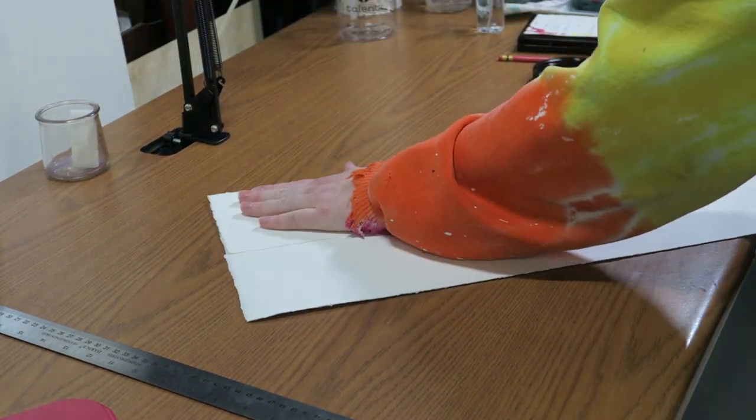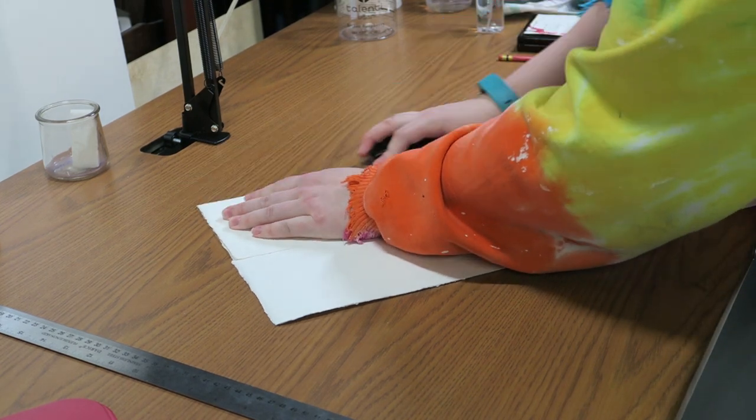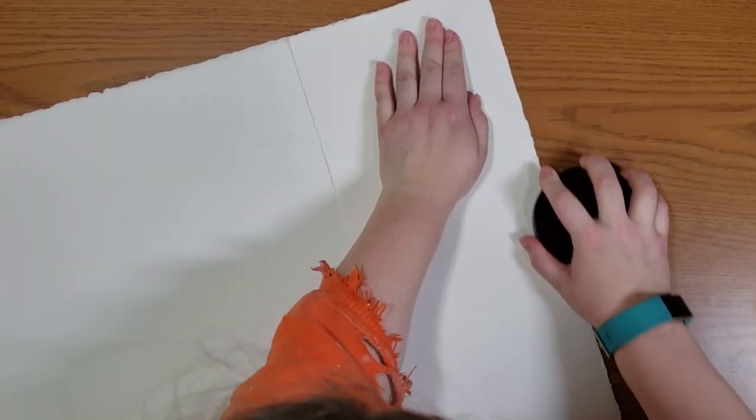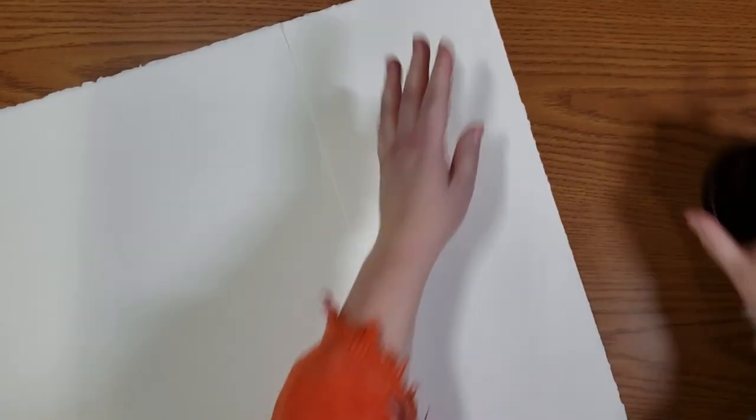And all that is doing is breaking down the fibers of this paper so that it'll be weak enough for me to gently tear and get that nice deckled edge. Now I like the deckled edge over a cut edge, even though I do cut my paper too if I just don't feel like doing this, because it just looks nice.